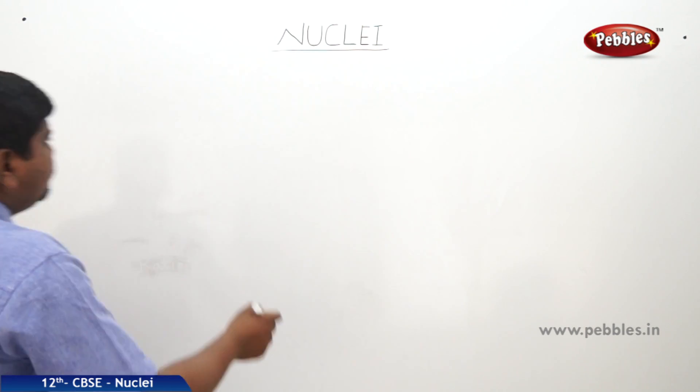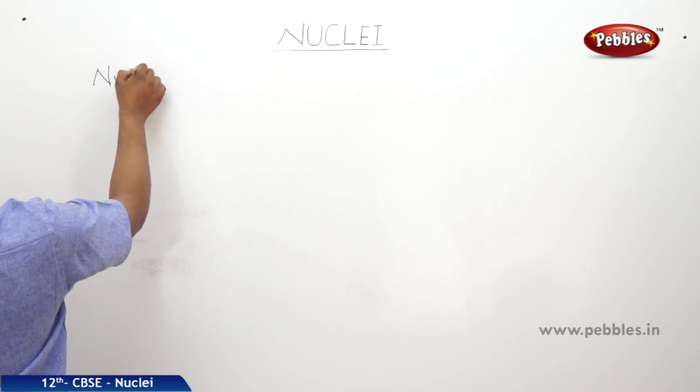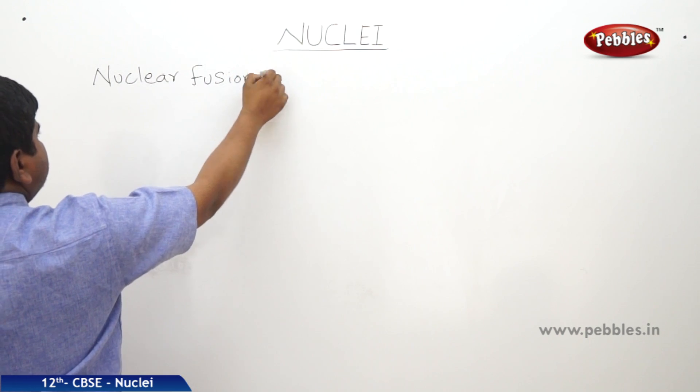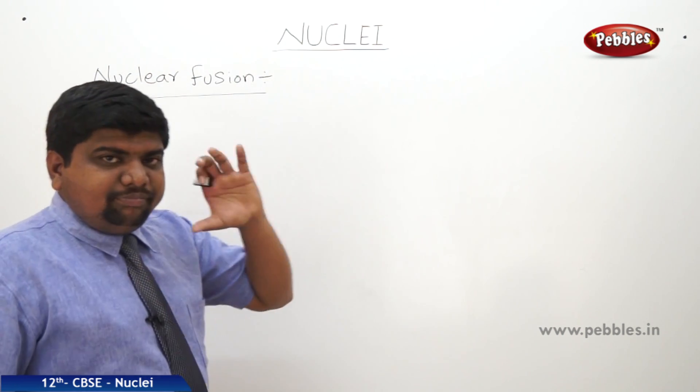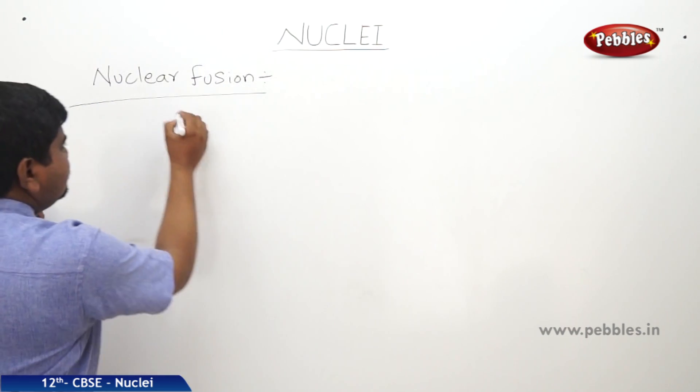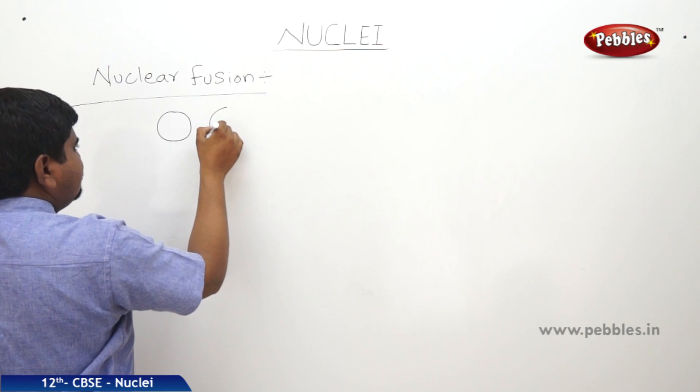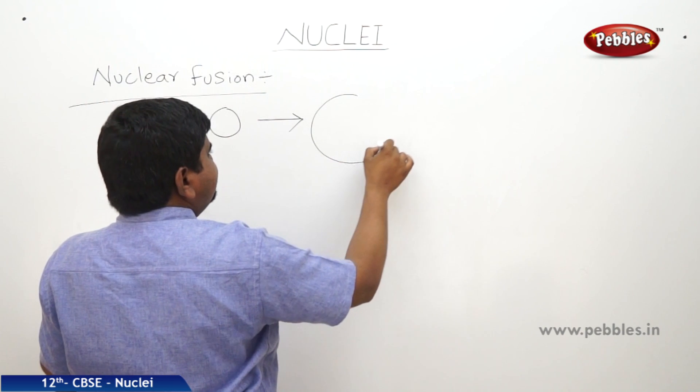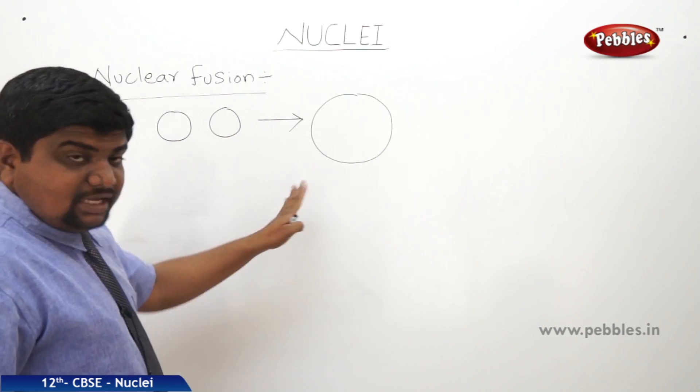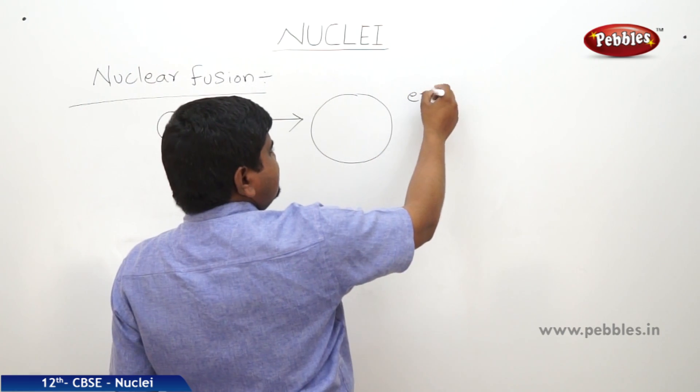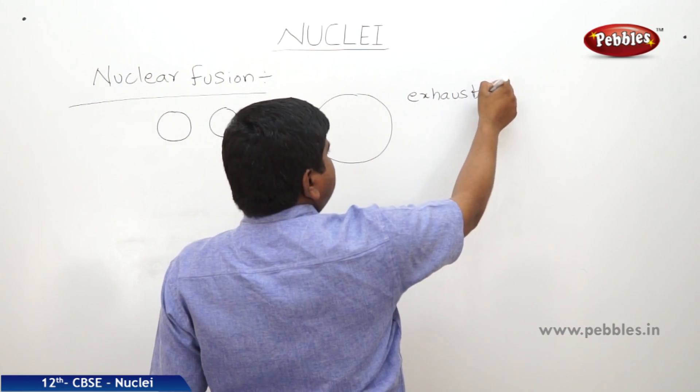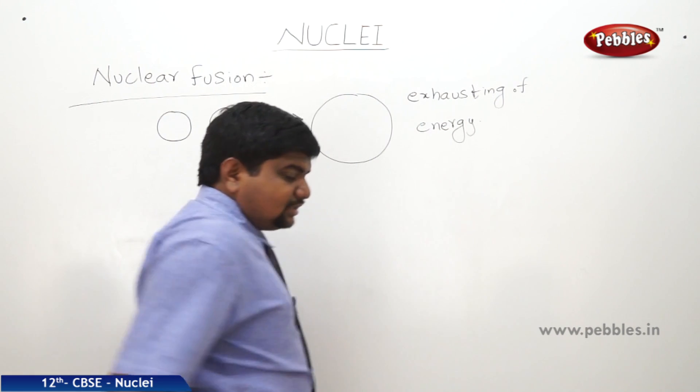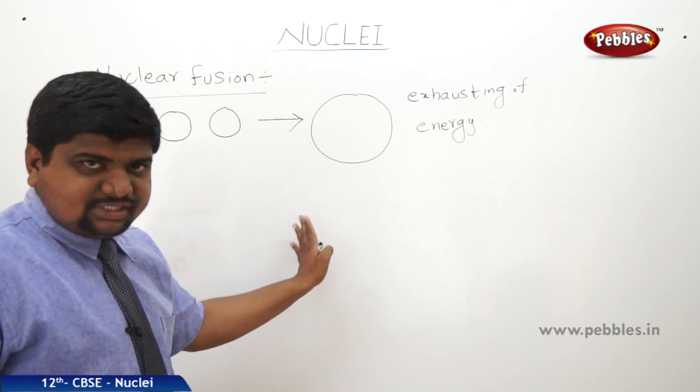The next nuclear energy is due to the nuclear fusion reactions. Fission is a big one splitting to small. Fusion is when two small nuclei combine each other and produce a big nucleus. The release of energy, exhausting of energy, is common in both the fission and fusion process.